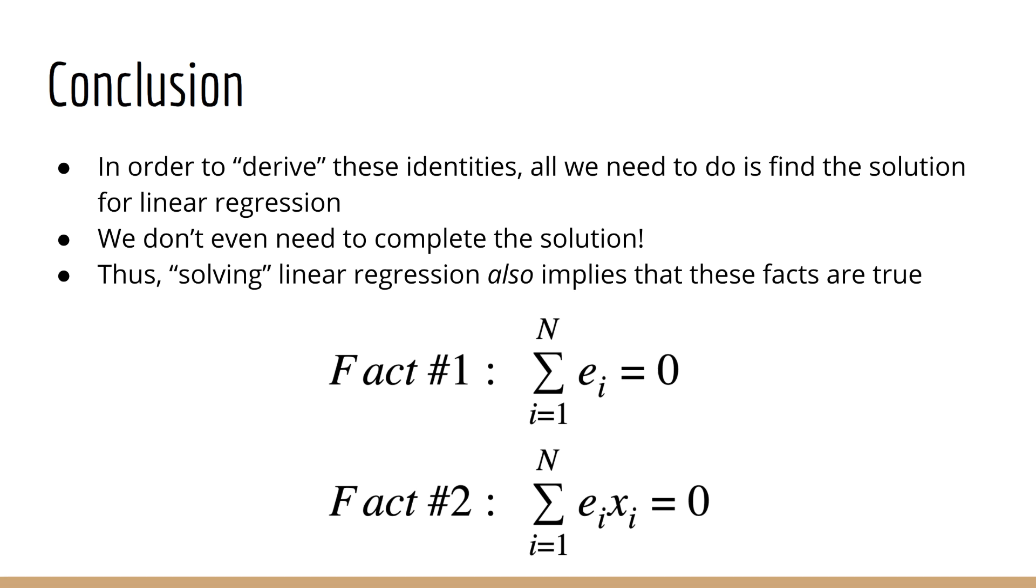What have we concluded? We've discovered that in order to end up with the identities that we started with, all we need to do is find the solution for the linear regression model. Furthermore, we don't even need to finish finding the solution since we can stop once we found the derivatives and set them to zero. In other words, we don't need to actually find w and b. Instead, we came up with two identities which must be solved in order to find w and b. Therefore, any solver which minimizes the sum of squared errors must also be ensuring that both of these identities are true.